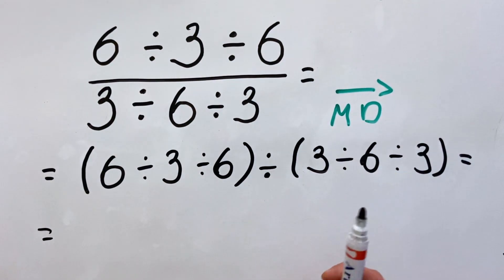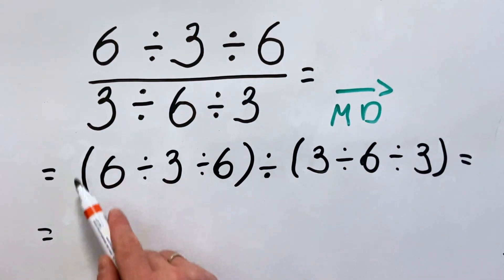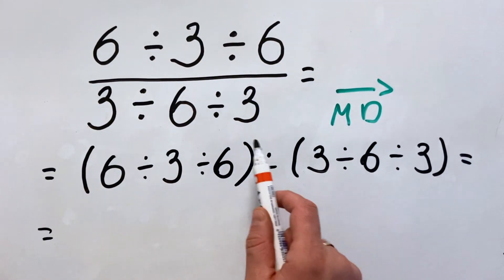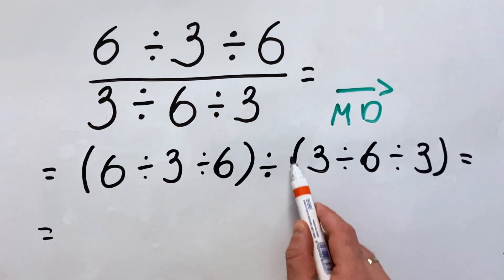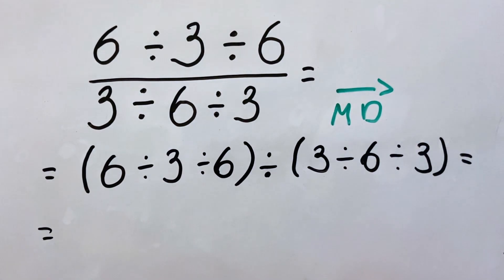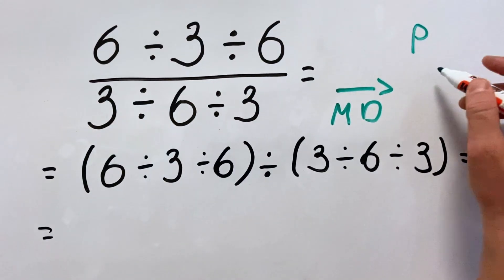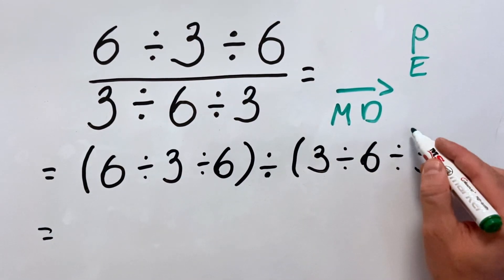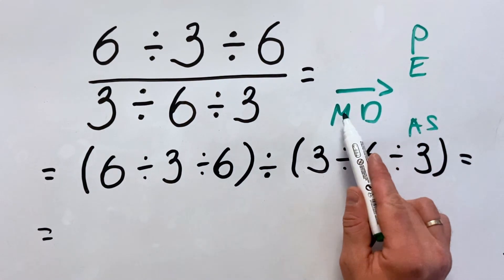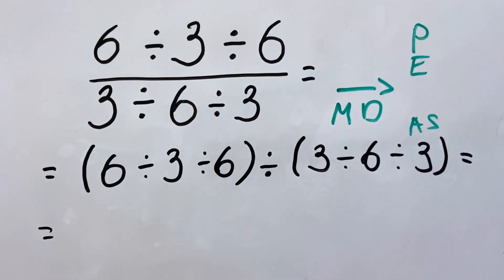Now what we have is basically only the division of two operations in parenthesis. Therefore, we will do the operation in each parenthesis first, and at the last step we will do this division. Because in the full order of operations — PEMDAS: parenthesis, exponents, multiplication, division, addition, and subtraction — parentheses have higher priority over multiplication and division. So we must do what's inside the parentheses first.